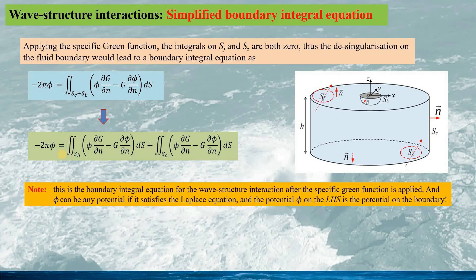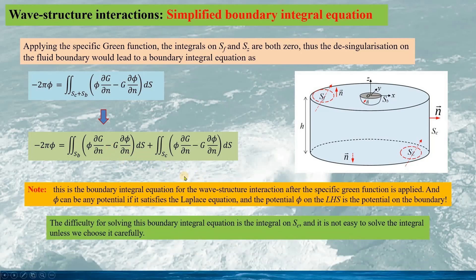Separating the surface integral into the integrals on Sb and on Sc respectively, we have the final expression. Note the potential function Phi on the left-hand side is either on Sb or Sc. This boundary integral equation for wave-structure interaction is not ready yet for a solution, because the control surface is still arbitrary. The next step — finding the solution of the surface integral on the control surface — will be discussed in the next part of the talk.